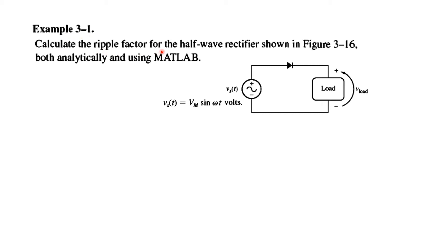Calculate the ripple factor for the half wave rectifier. So we need to calculate ripple factor here. This is half wave rectifier. The input voltage is Vm sin omega T. And this ripple factor has to be calculated analytically, that is mathematically, and also by using MATLAB. So I will not do the MATLAB part. The program is given in the book. If you have MATLAB software, simply plug in the programs, and you should be able to get the answer.